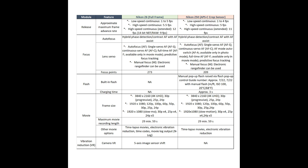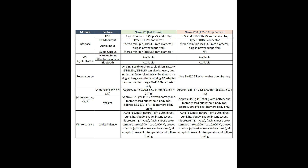Time-lapse is available in both cameras. The Z50 has electronic vibration reduction, though how well it performs remains to be seen. As for interfaces, both have USB and HDMI available, and both have audio input. However, audio output is only available on the Nikon Z6, which also features a Type-C connector with super-speed USB.